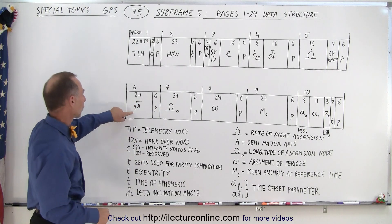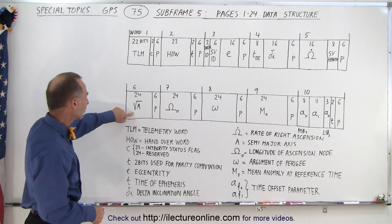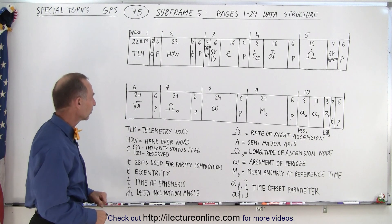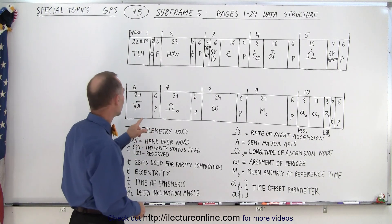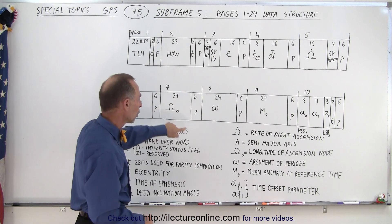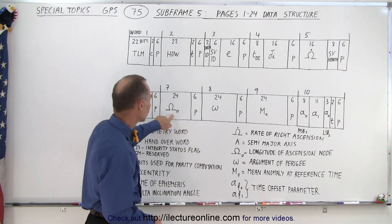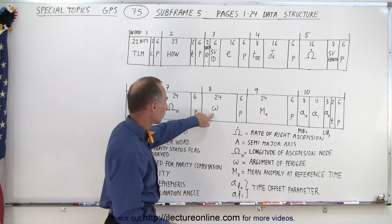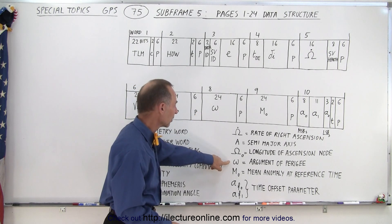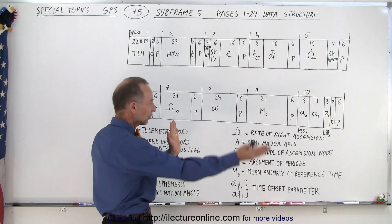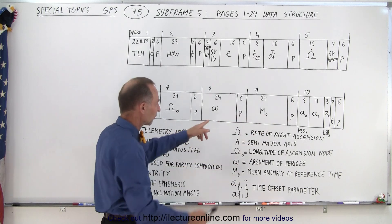Getting towards six we have the square root of the semi-major axis and the six parity bits. Then here notice we have also 24 bits associated with the longitude of ascension node. Then here we have 24 bits associated with the argument of perigee. That's the angle relative to the perigee point in the orbit of the satellite.